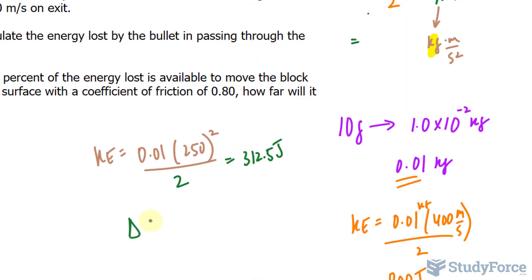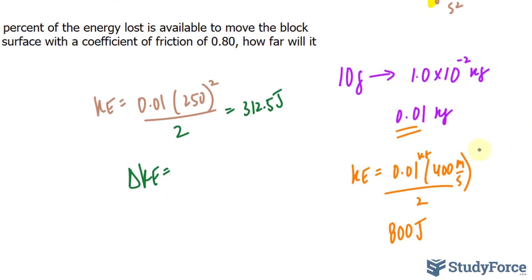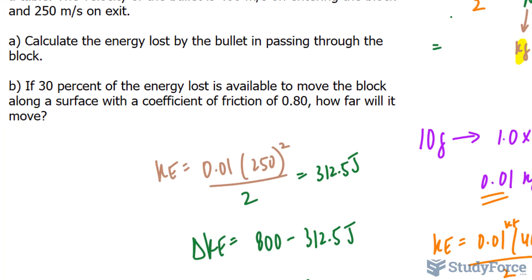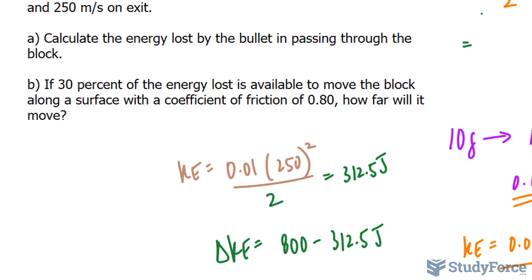I'll take the difference and I'll denote that as delta KE. So the final minus the initial, 800 minus 312.5, and you should get an answer rounded to 488 joules. That answers question A. That is the energy lost by the bullet.